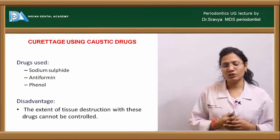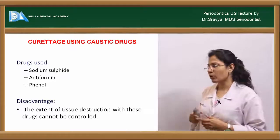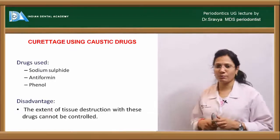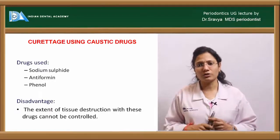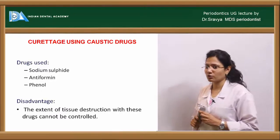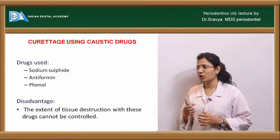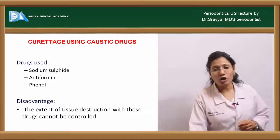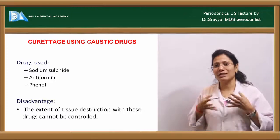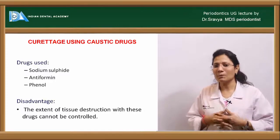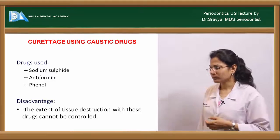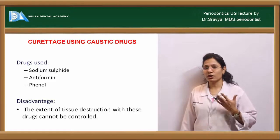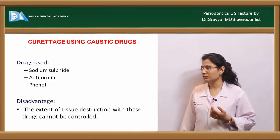For curettage using caustic drugs, important agents include sodium sulfide, antiformin, and phenol. However, the main disadvantage is that the extent of tissue destruction is not limited — you cannot control the depth of penetration of these drugs into the tissues.